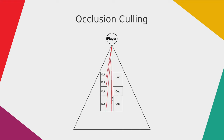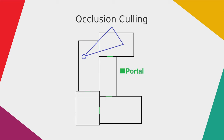One approach to occlusion culling is cell-based occlusion culling. In this method the scene is divided into different cells, and all cells are connected to each other via portals. Examples of portals could be an open door, an open gate, or a window. The algorithm works like this: if you are inside a cell, it only considers objects inside that cell for rendering. All other cells and their objects are not considered for rendering at all.